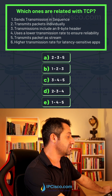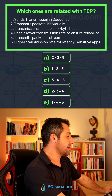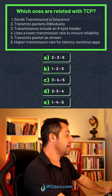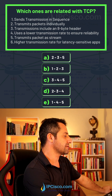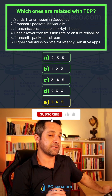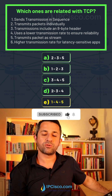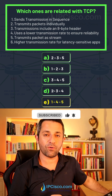Transmits packet as stream — yes, this is also true for TCP. Higher transmission rate for latency sensitive applications — this is the property of UDP. So our final answer is options one, four, and five.